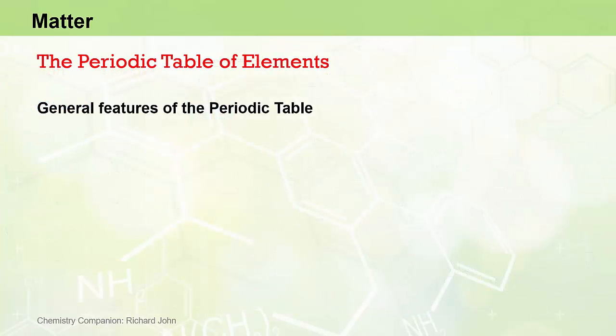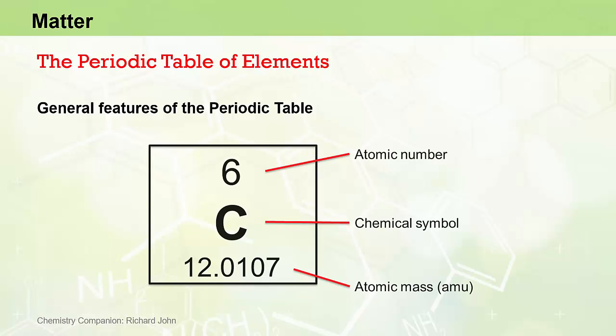For now, however, let's look at some of the general features of the Periodic Table and its structure. Each element on the Periodic Table is represented by a square box containing useful information about that element. At a minimum, all versions of the Periodic Table should give the atomic number of an element, its chemical symbol and its atomic mass.